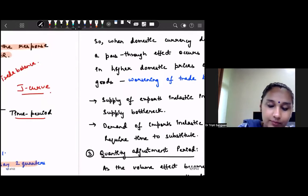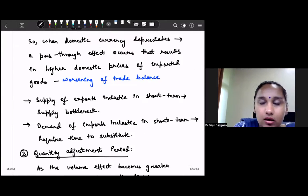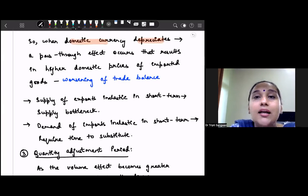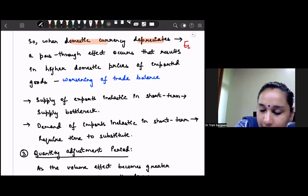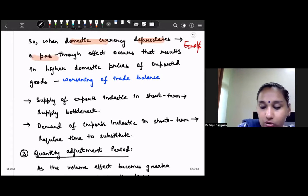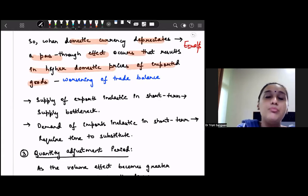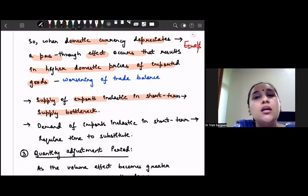And third type is, just explaining what is the pass-through: when the domestic currency depreciates, which means that E INR per USD increases, so when it depreciates a pass-through effect occurs and because of this effect there are higher domestic prices of imported goods and thus the trade balance worsens. Why does it happen? Because in a short time period, supply bottlenecks occur. Supply bottleneck means we cannot immediately change the supply side. There is inelasticity - supply of exports is inelastic in the short run.